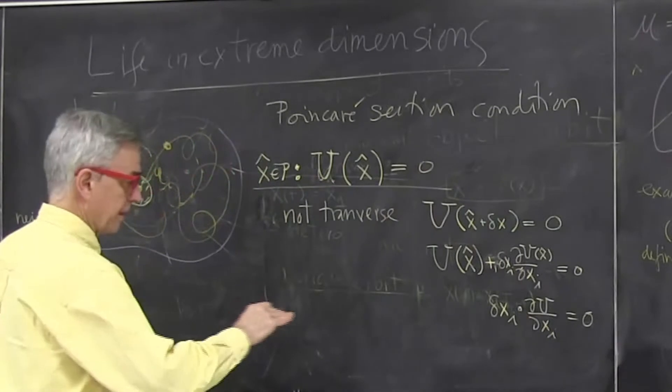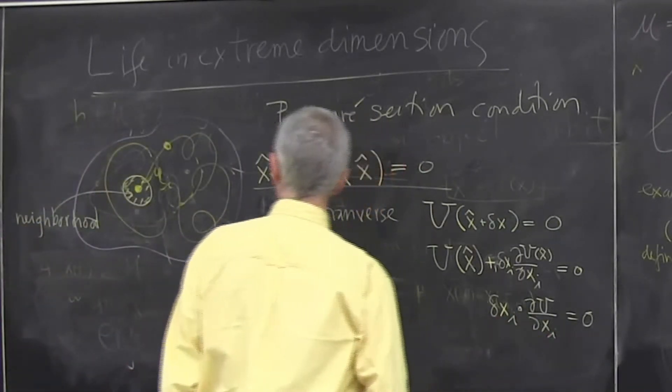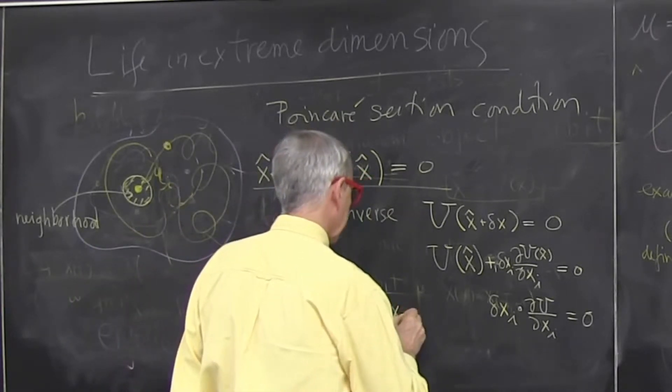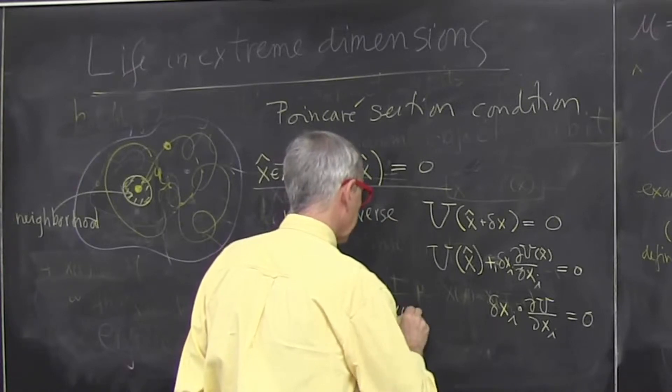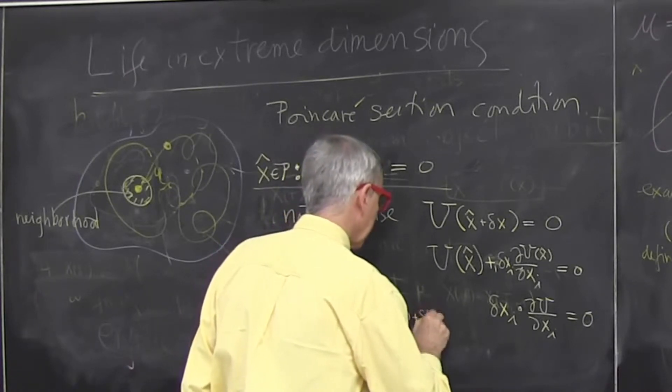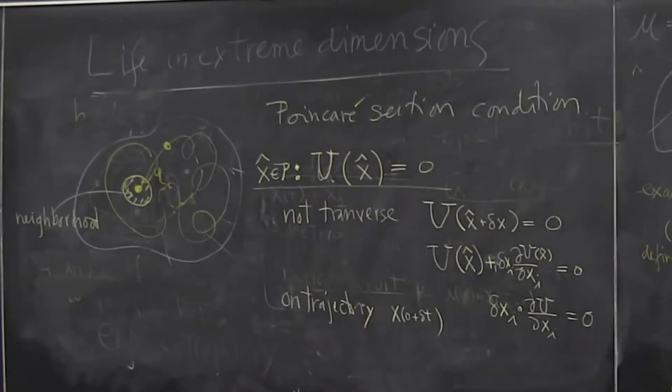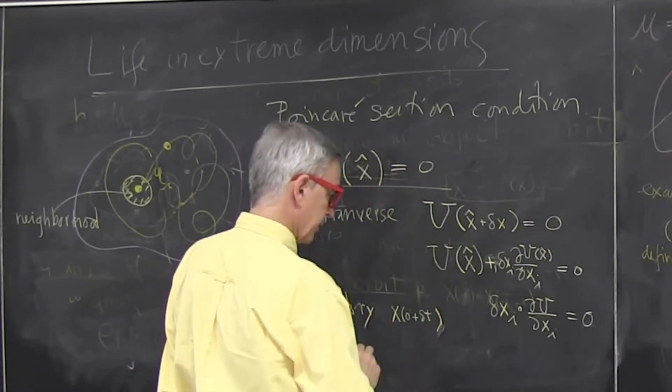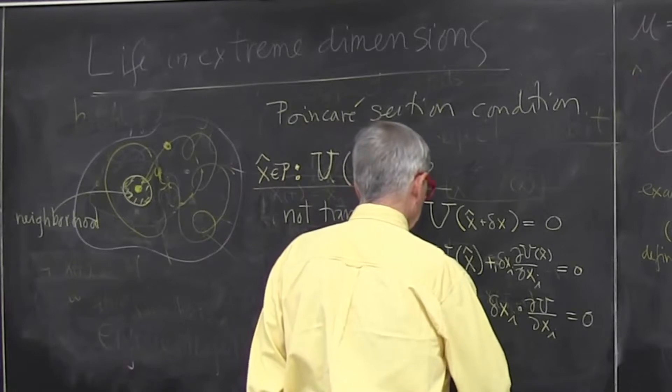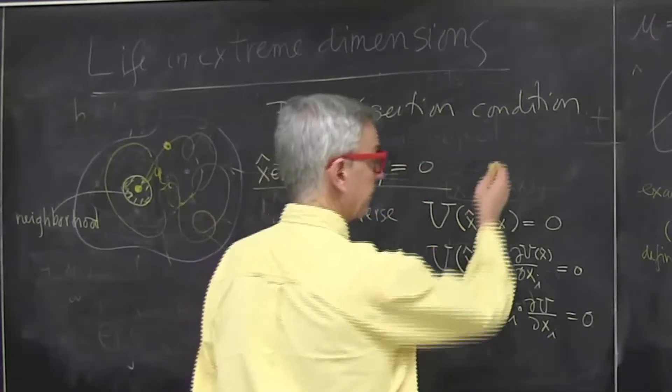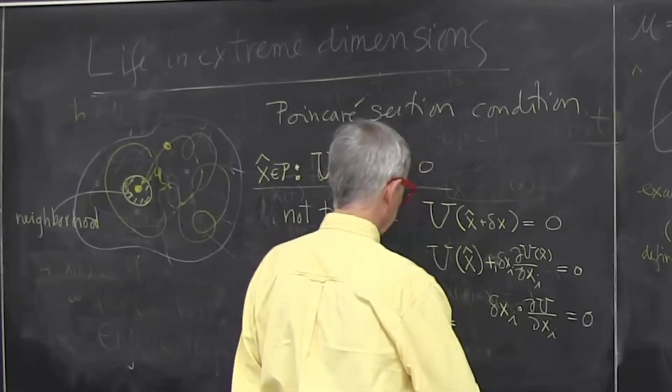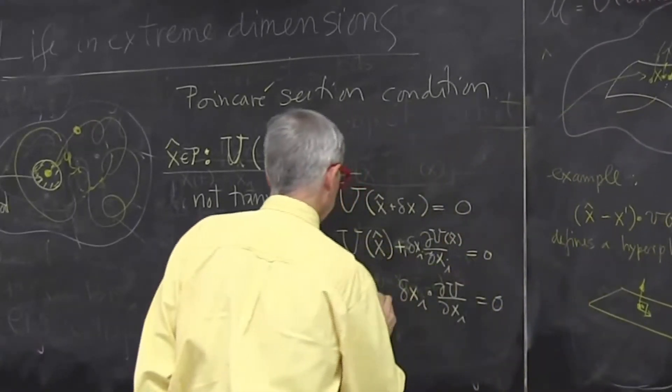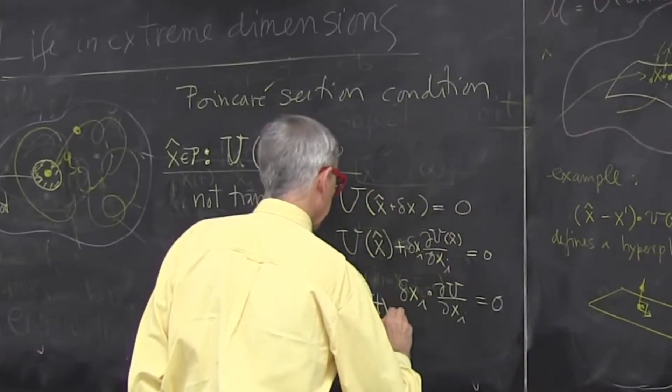hat usually means it's a unit normal vector, they'll be proportional to the gradient. So I'm not transverse if I satisfy this condition. I'm on trajectory. So if I started at x time 0 and went short time out, so I move just a little bit. That's a point on the trajectory.